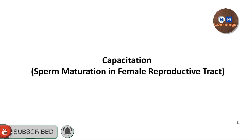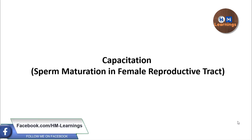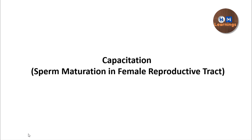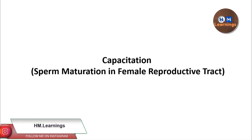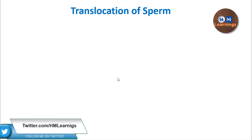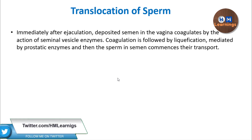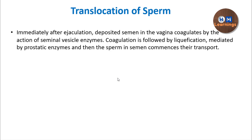Today we are back with another video of the Reproductive System, about the next part which is Capacitation. In the previous videos of the Reproductive System, you have seen about the Male Sexual Act and also about semen examination. The Male Sexual Act ends with ejaculation of semen in the female reproductive tract, in the deeper parts of the vagina, and after that the sperm has to transport to the part where fertilization is going to happen.